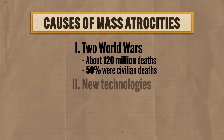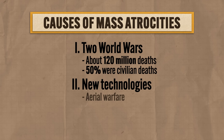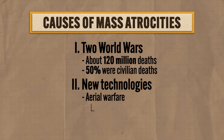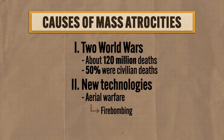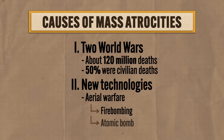Another major cause of atrocities was new technology. For example, World War II ushered in the perfection of aerial warfare, which included the horrifying reality of firebombing, which set entire urban areas on fire and killed hundreds of thousands in their wake. Also, the atomic bomb was responsible for the death of hundreds of thousands of Japanese civilians in Hiroshima and Nagasaki.